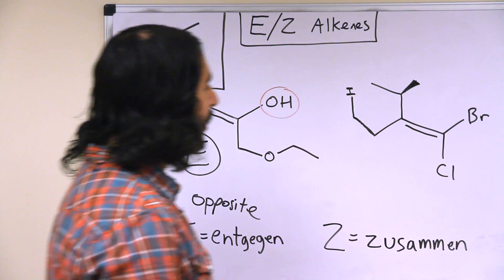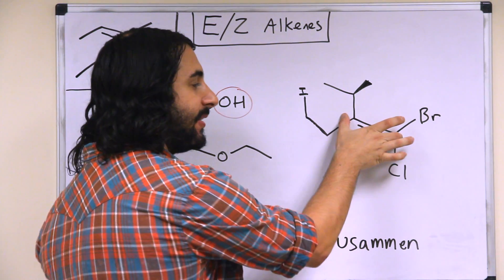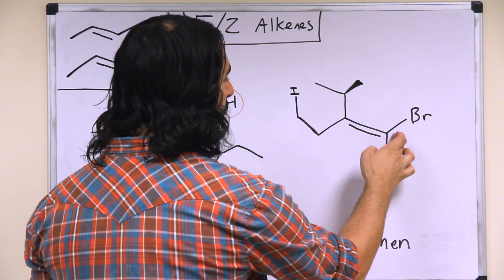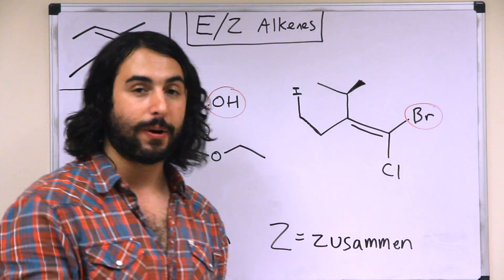So now let's look over here. Same thing: here's the two carbons, each one has two groups and we must decide which has priority over the other. So over here bromine is heavier than chlorine, so bromine takes priority.